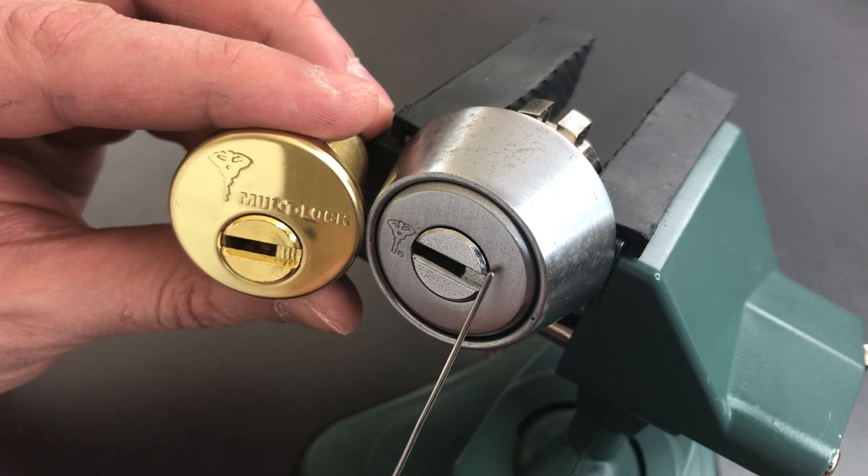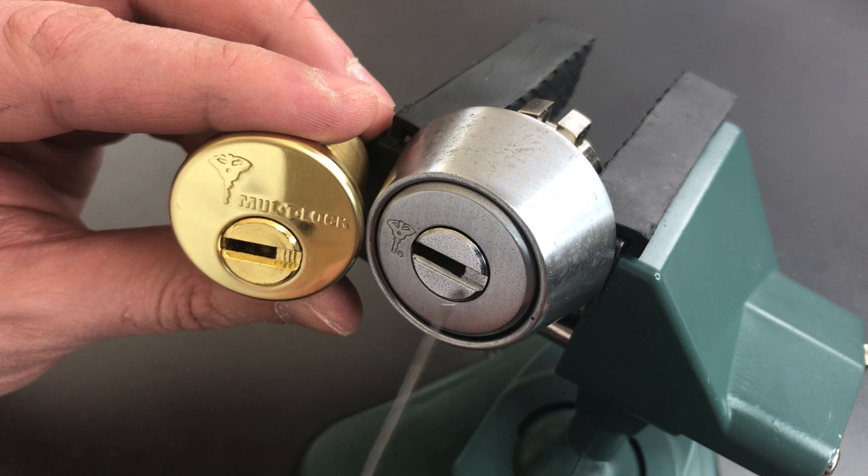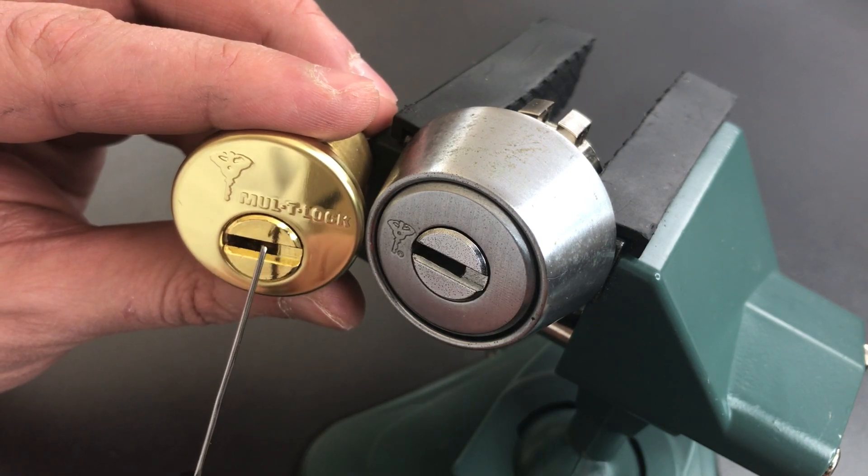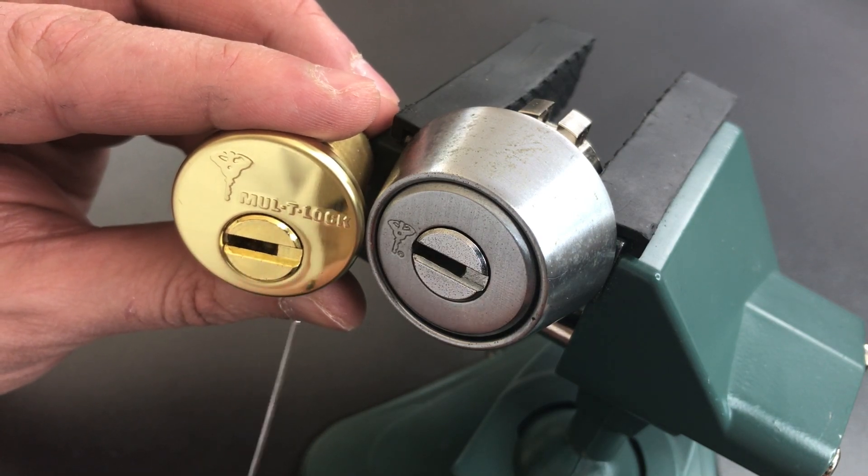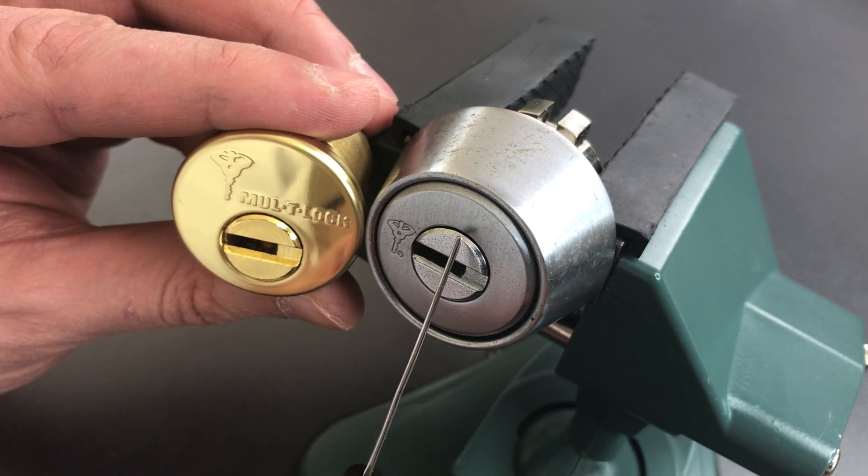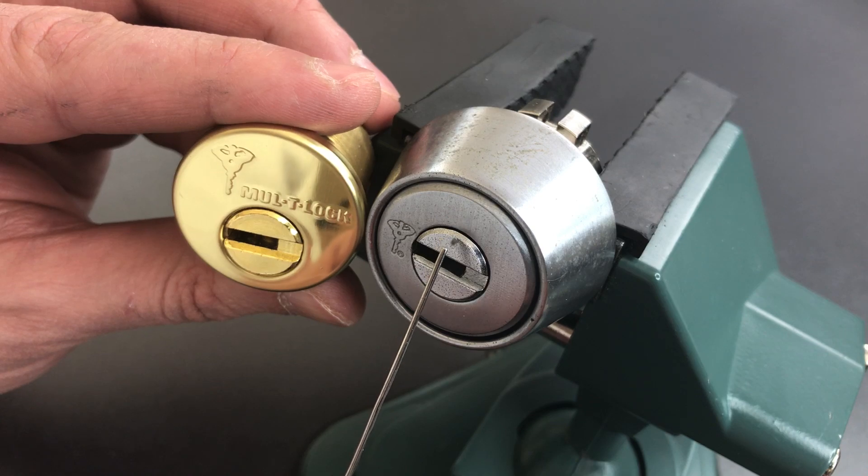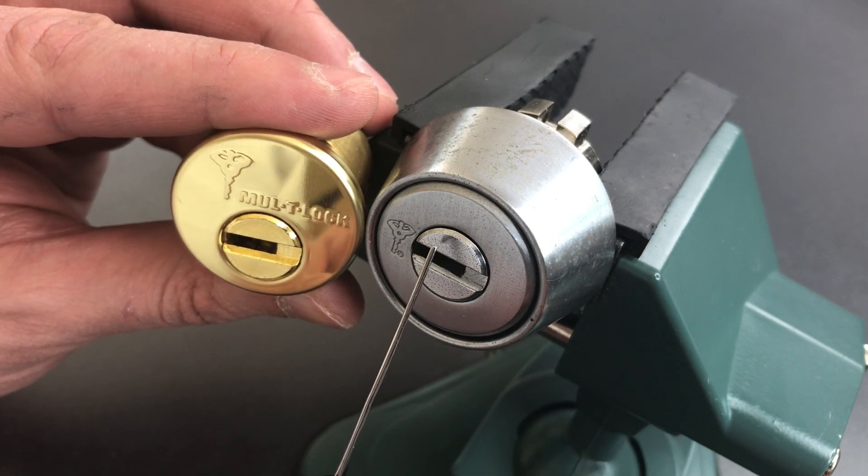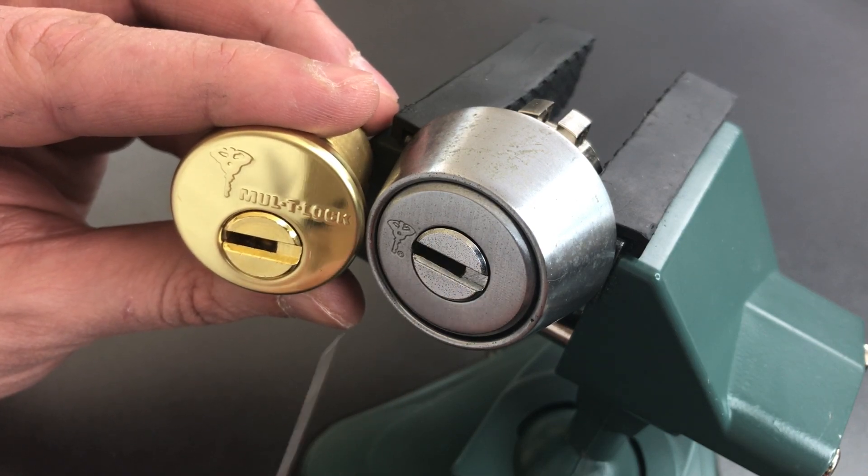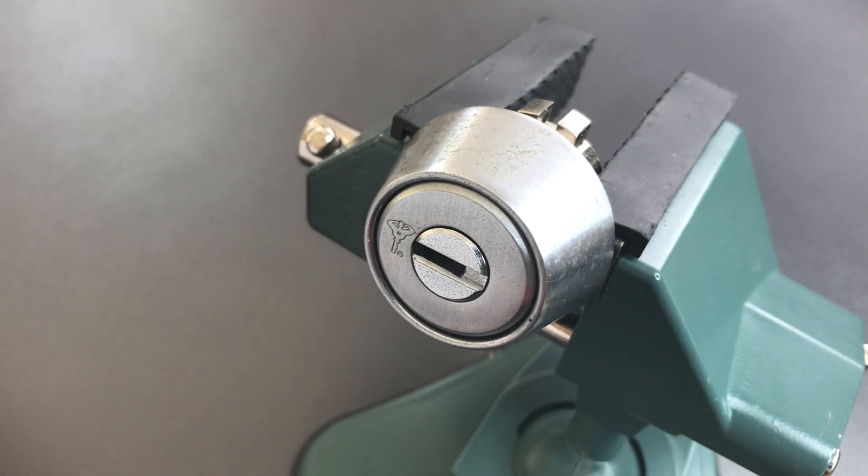In the Japanese lock, it's right in the center of the cylinder, and on the American lock, it's down at the bottom. What this means is we don't have a lot of room for driver pins in this Japanese lock, so what we'll probably find inside is an abbreviated version of multi-lock's normal pins, probably something similar to what they would put in a cam lock or a furniture lock.